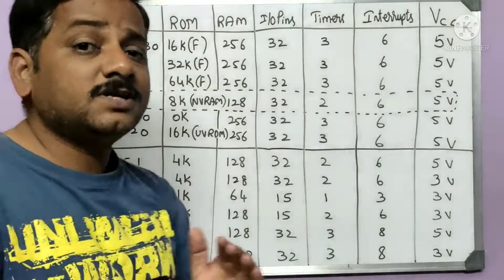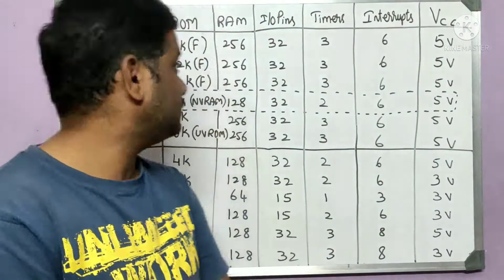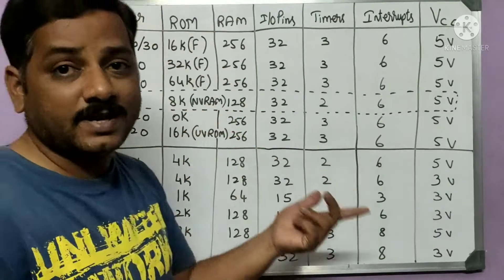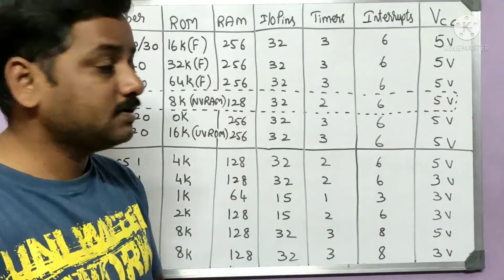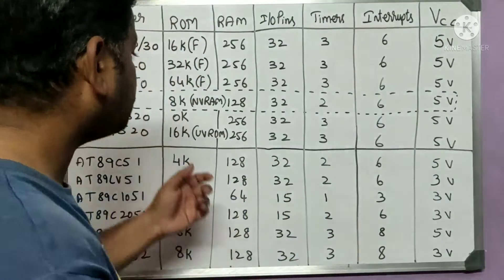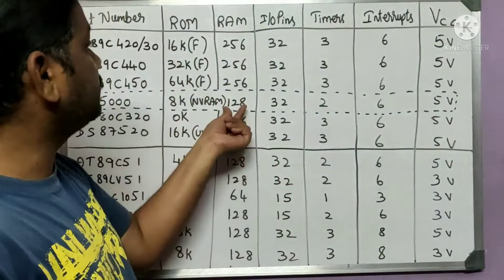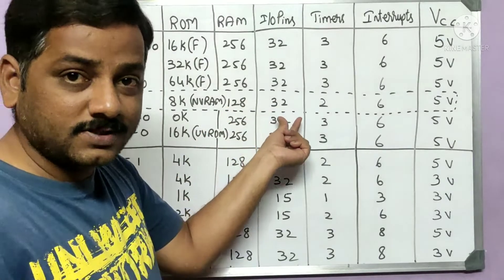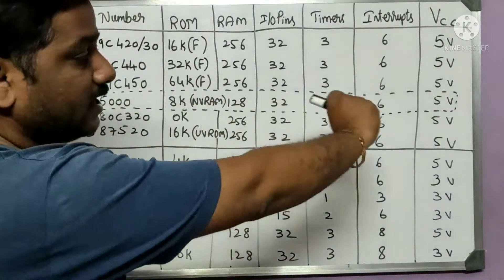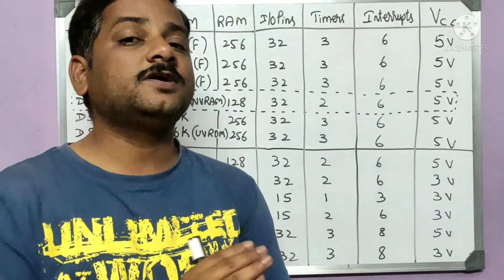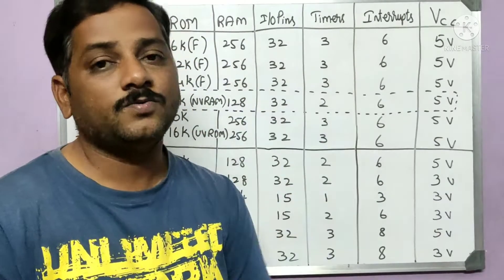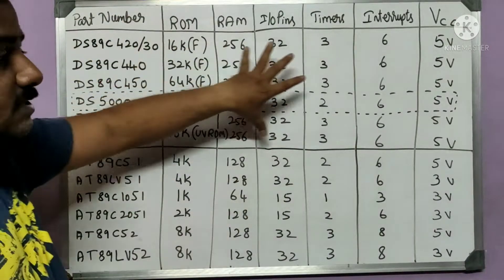The DS5000 from Dallas Semiconductor is similar to the 8051 but with one key difference: instead of 4K ROM, it has 8K of NV RAM — Non-Volatile RAM — meaning data is retained even without power. The remaining specs are the same as the 8051: 128 bytes RAM, 32 I/O pins, two timers, six interrupts, and 5V operating voltage. So the DS5000 is essentially an 8051 with 8K NV RAM instead of 4K ROM.